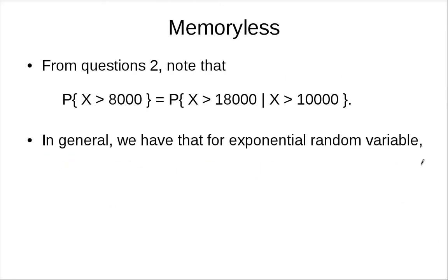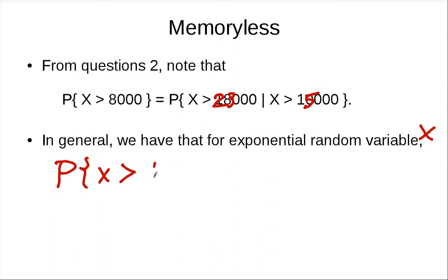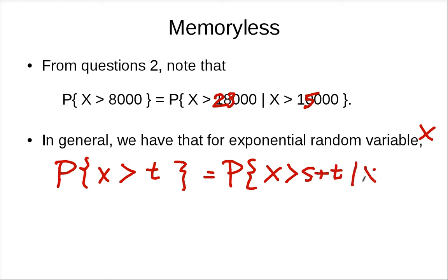If you look at this, we know that P(x > 8,000) equals this conditional probability. And this holds not just for these specific numbers — in general, for an exponential random variable, the probability that x is larger than t equals the probability that x is larger than s plus t, given that x is larger than s.